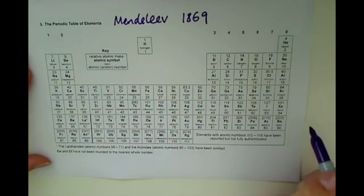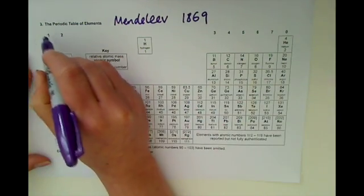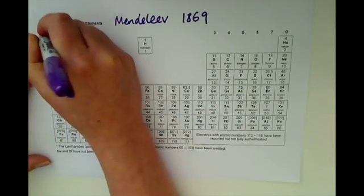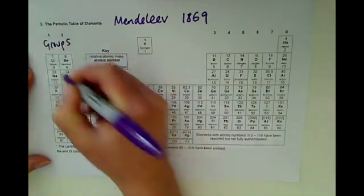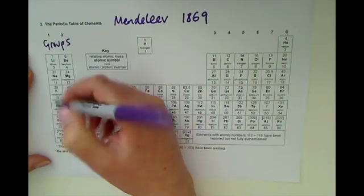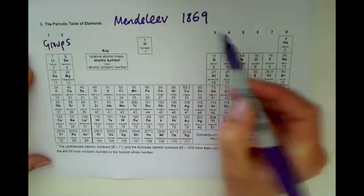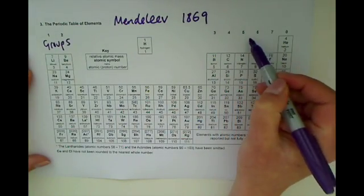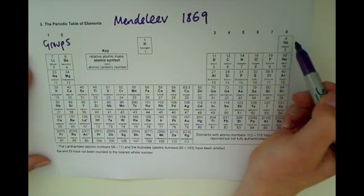So the numbers at the top are for the group numbers. Groups go up and down, so we've got one, two, three, four, five, six, seven, and group zero.